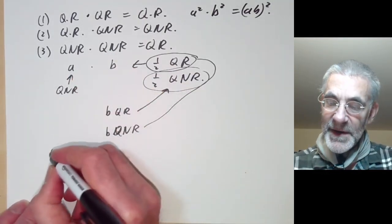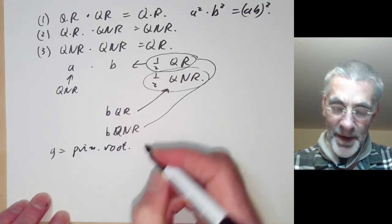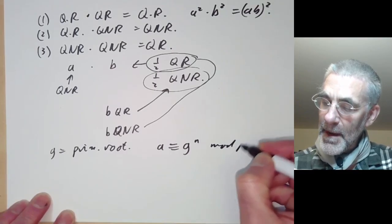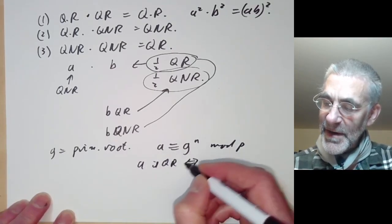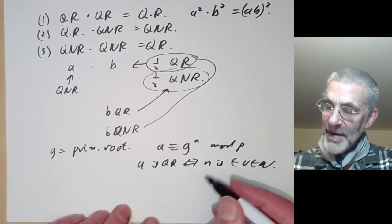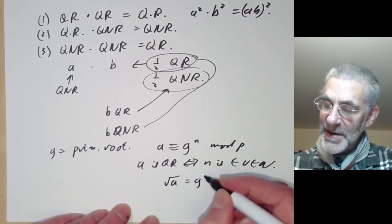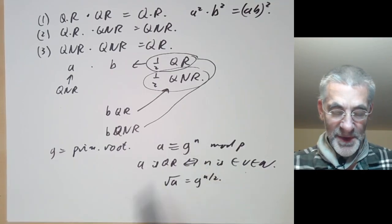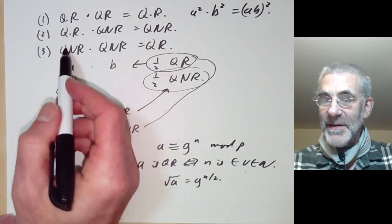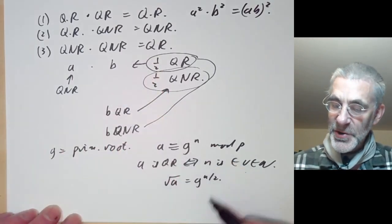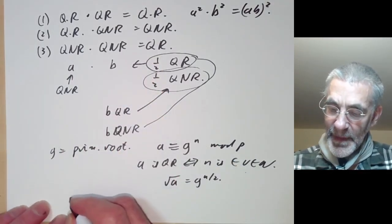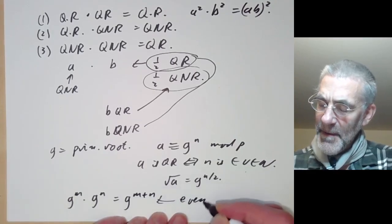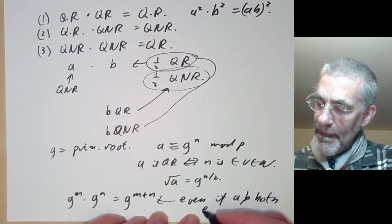There's another way to prove this. If we take g to be a primitive root, then a is equivalent to g to the n for some n. We see that a is a quadratic residue if and only if n is even. If n is even, we can find the square root of a as g to the n over 2. And the fact that quadratic non-residues times quadratic non-residues are quadratic residues becomes obvious: g to the m times g to the n equals g to the m plus n, which is even if both m and n are odd.